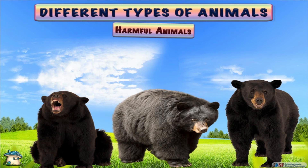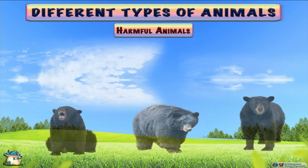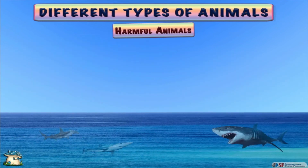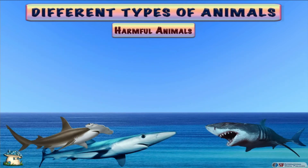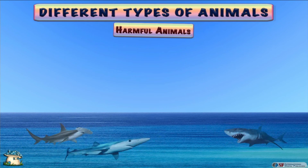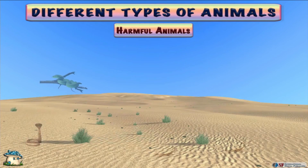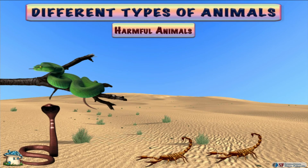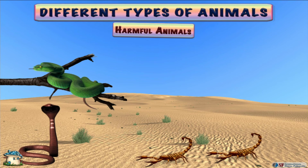Every year, bears kill 50 people, whereas sharks kill around 100 people. Some animals are harmful because they are venomous — their sting can be dangerous and deadly.